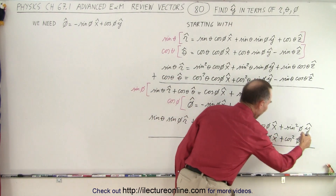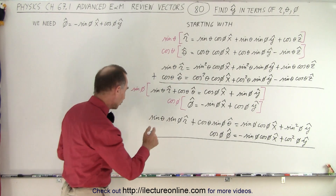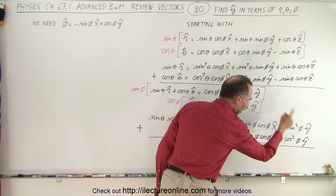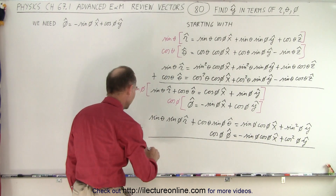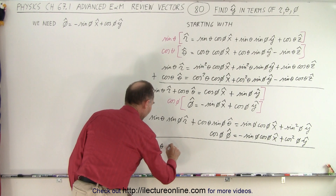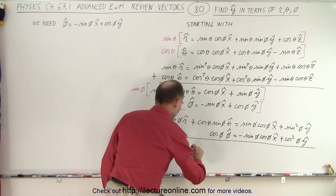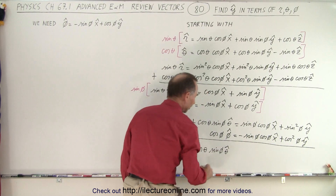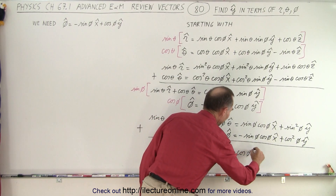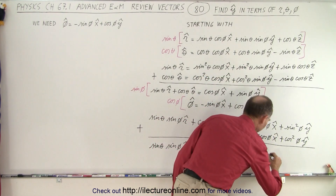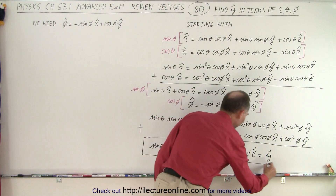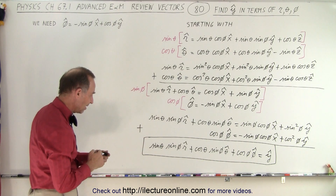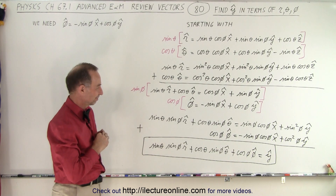We're trying to keep the y-unit vector and get rid of the x-unit vector. When we add the two equations together, the x-unit vector drops out, and we get sine squared plus cosine squared of phi times the y-unit vector, which is simply 1 times the y-unit vector. On the left side, we end up with sine of theta sine of phi r-unit vector plus cosine of theta sine of phi theta-unit vector plus cosine of phi phi-unit vector, which is the y-unit vector expressed in terms of r, theta, and phi. And that is how it's done.